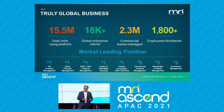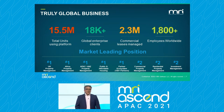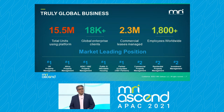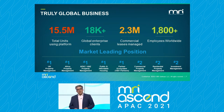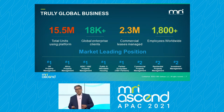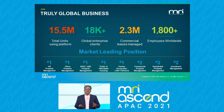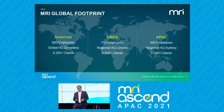From our head office just outside Cleveland in Ohio, MRI Software has come a long way and built a global name in real estate technology. As it stands, we have 15.5 million units using our platform, 18,000 global enterprise clients, 2.3 million commercial leases managed, and 1,800 employees worldwide. We have a market-leading position in a number of regions across a number of software suites, achieved through organic growth and acquisition, with a worldwide footprint covering Europe, the Americas and APAC.